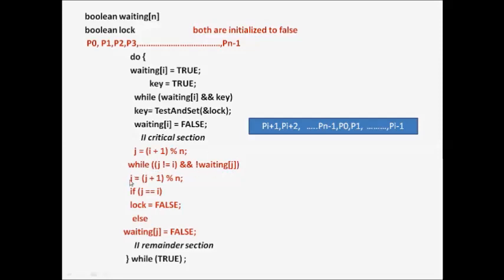After initializing `j`, there is a while loop that keeps executing as long as its condition is true. Inside the loop, the value of `j` keeps increasing in cyclic order. This condition remains true as long as `j` is not equal to `i` and `waiting[j]` is false. The condition becomes false when either `j` equals `i`, or `waiting[j]` equals true.